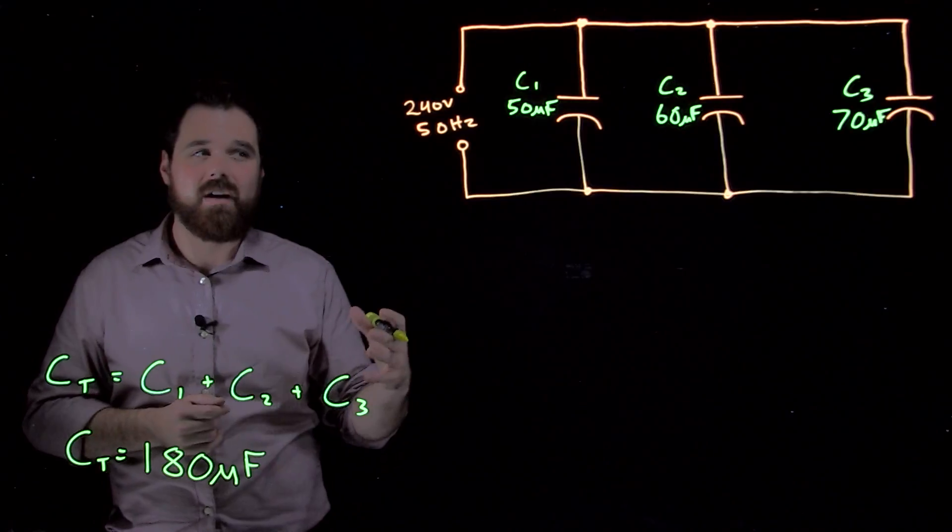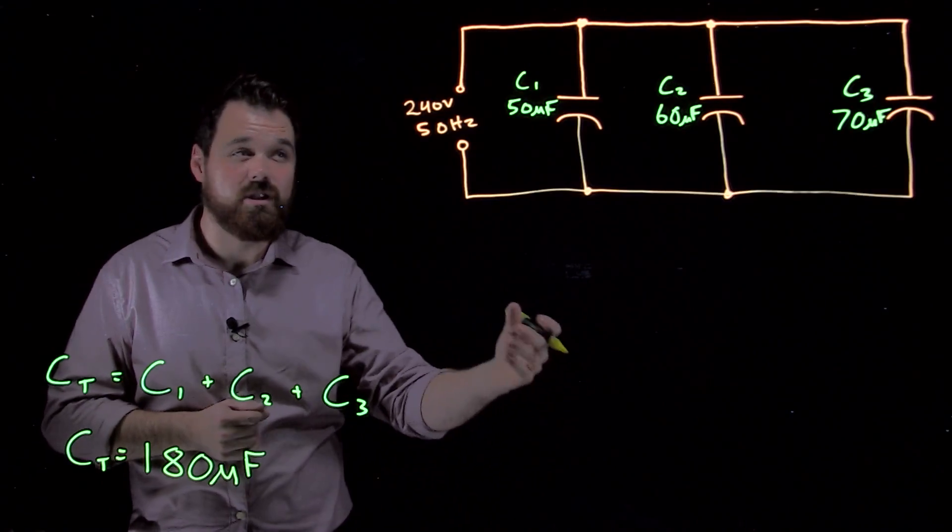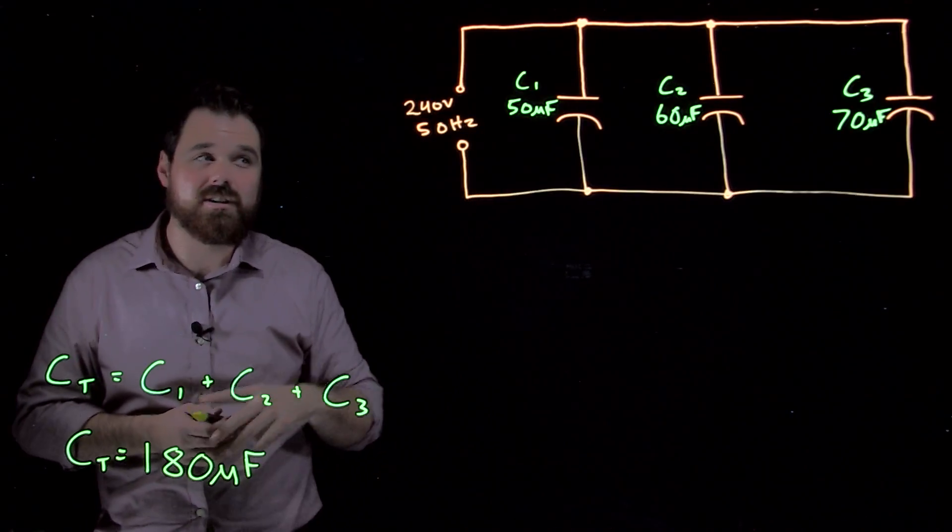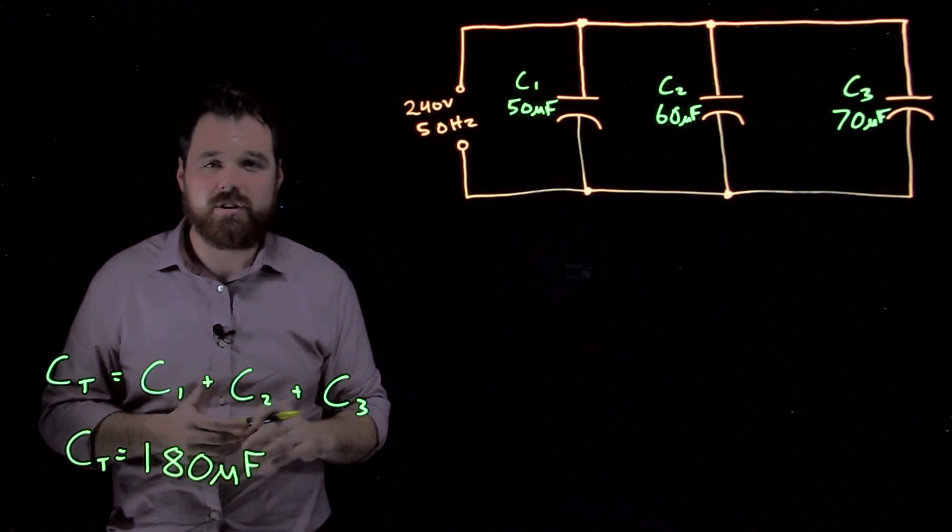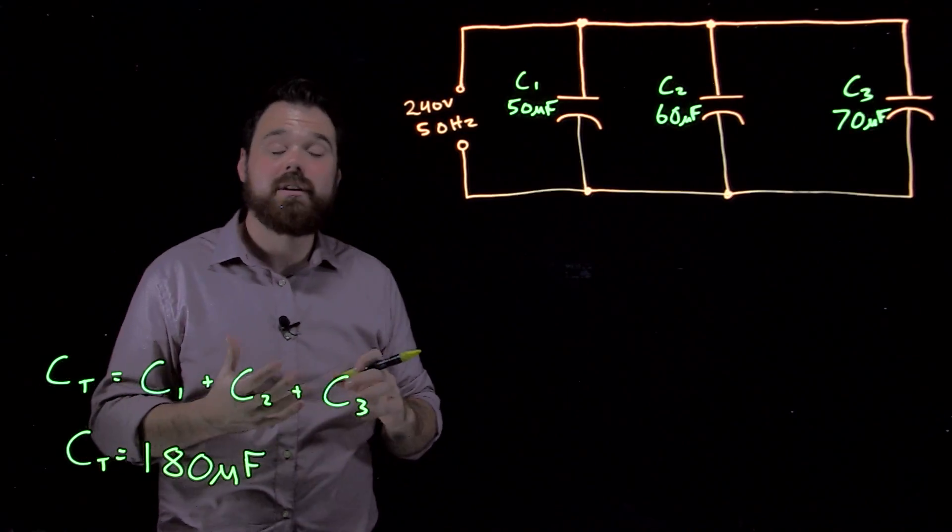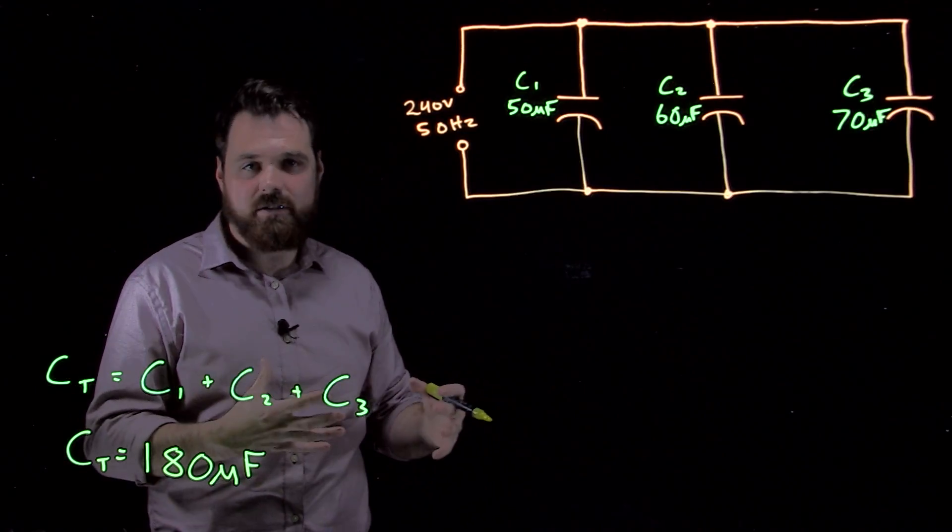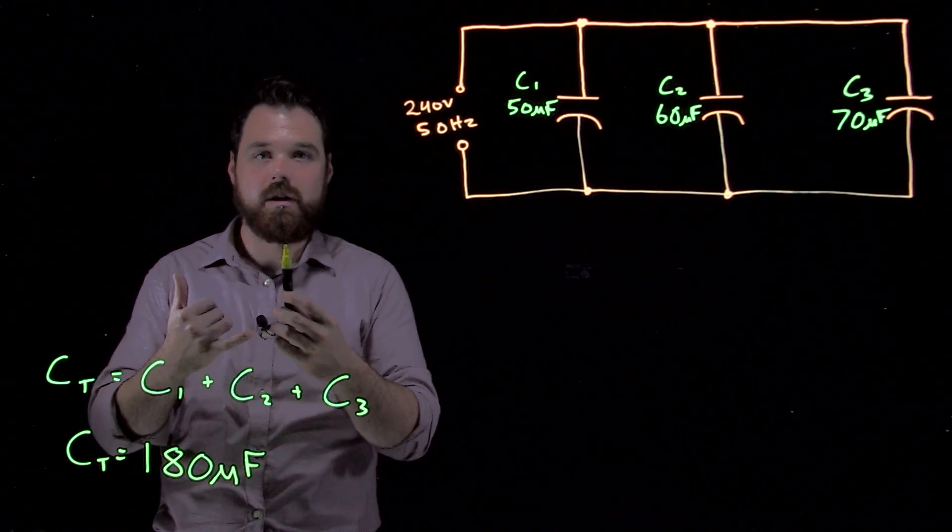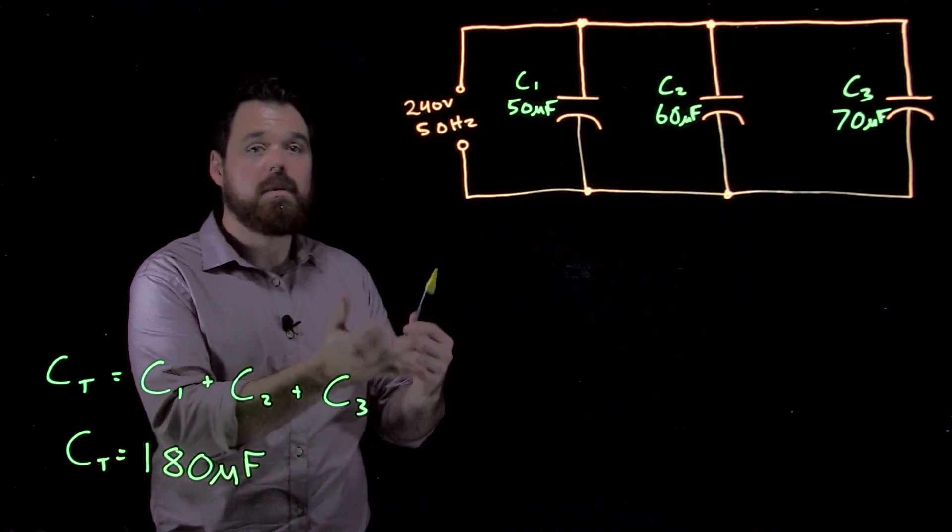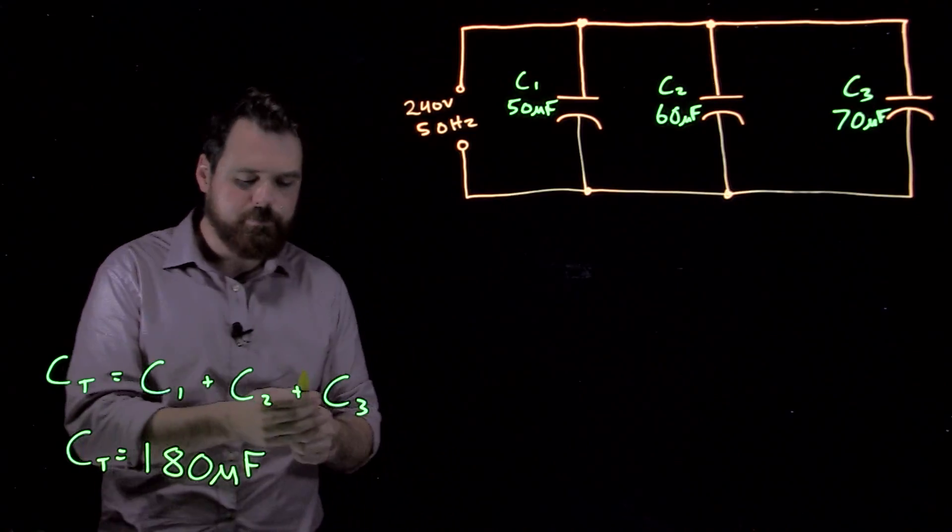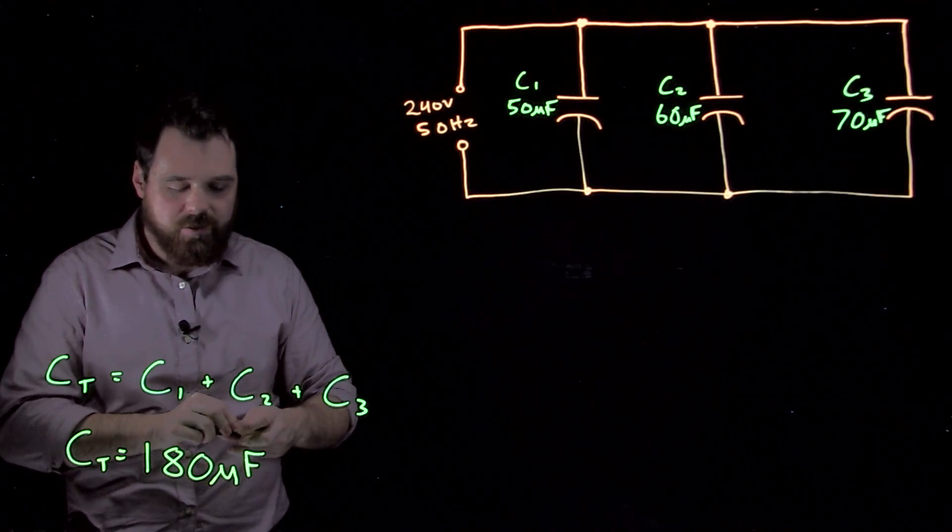Now what we have is an alternating current AC, in this case 240 volts, running at 50 Hertz, frequency of 50 Hertz. We're going to see that capacitive reactance. Capacitive reactance is caused by the frequency and the capacitance in this circuit. We have a couple things going on.